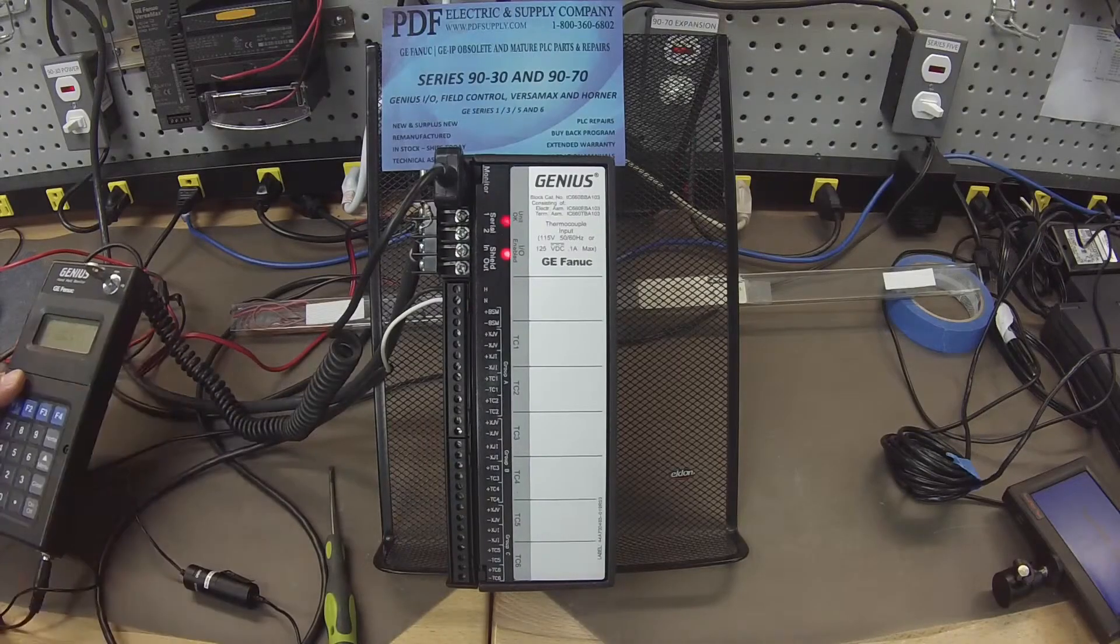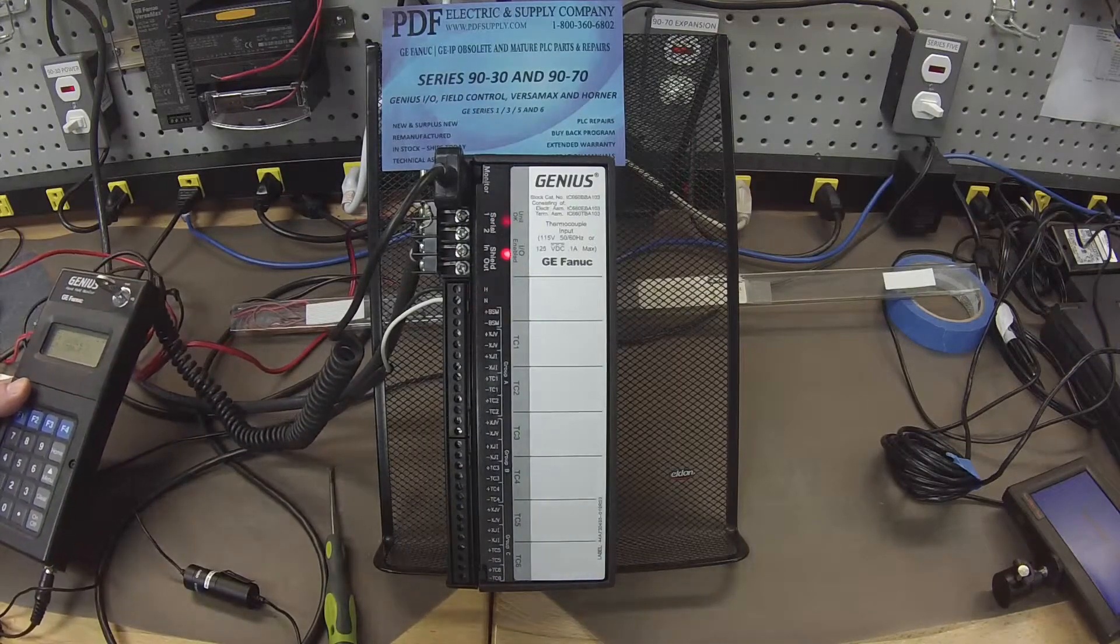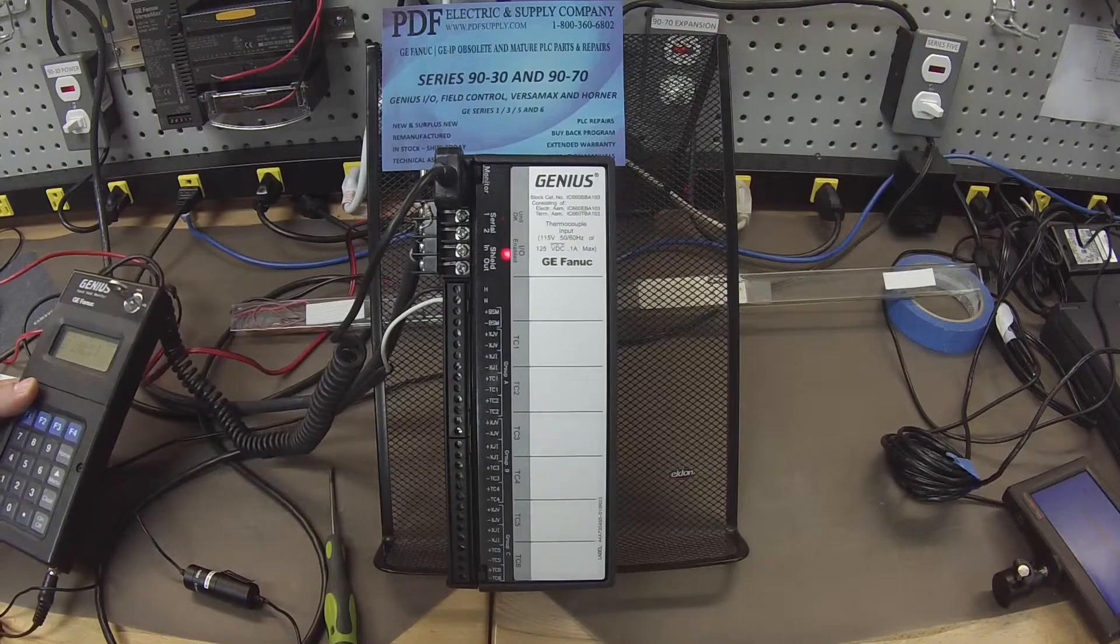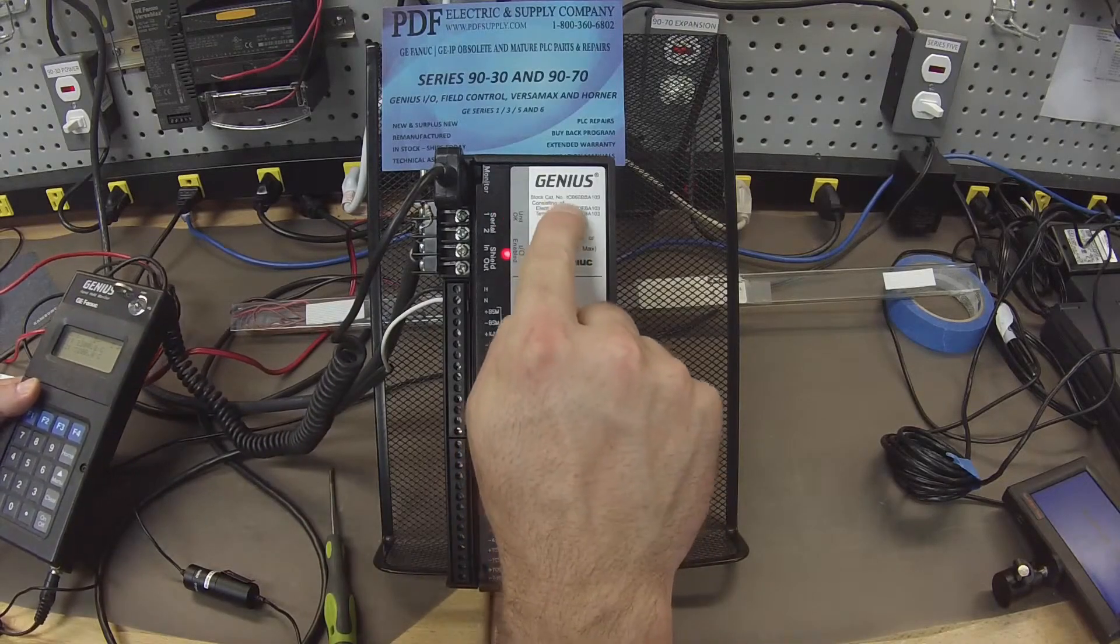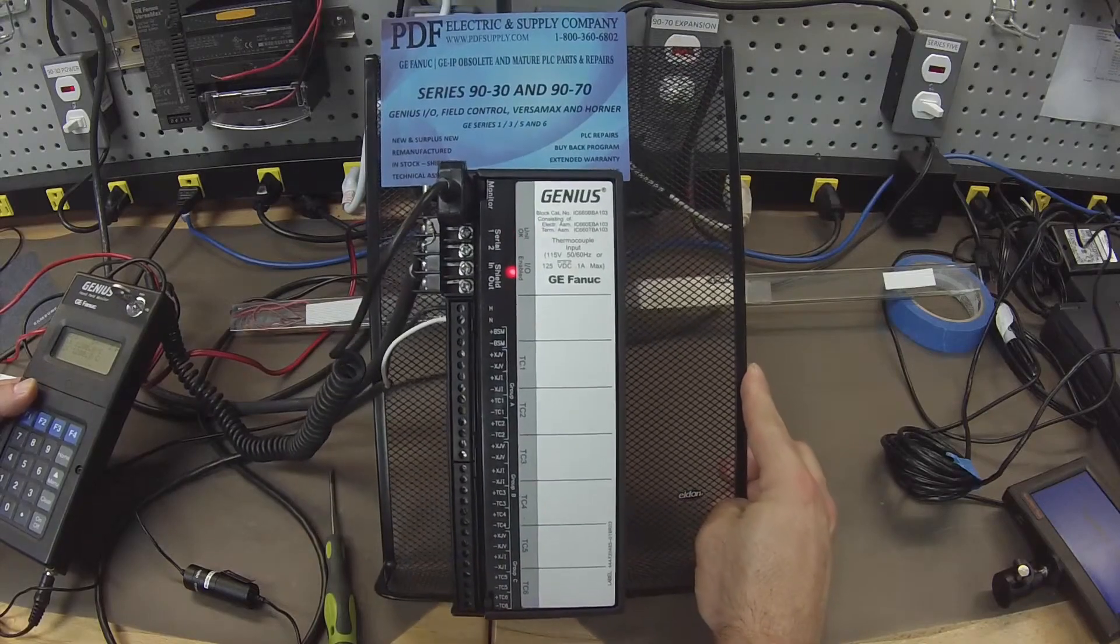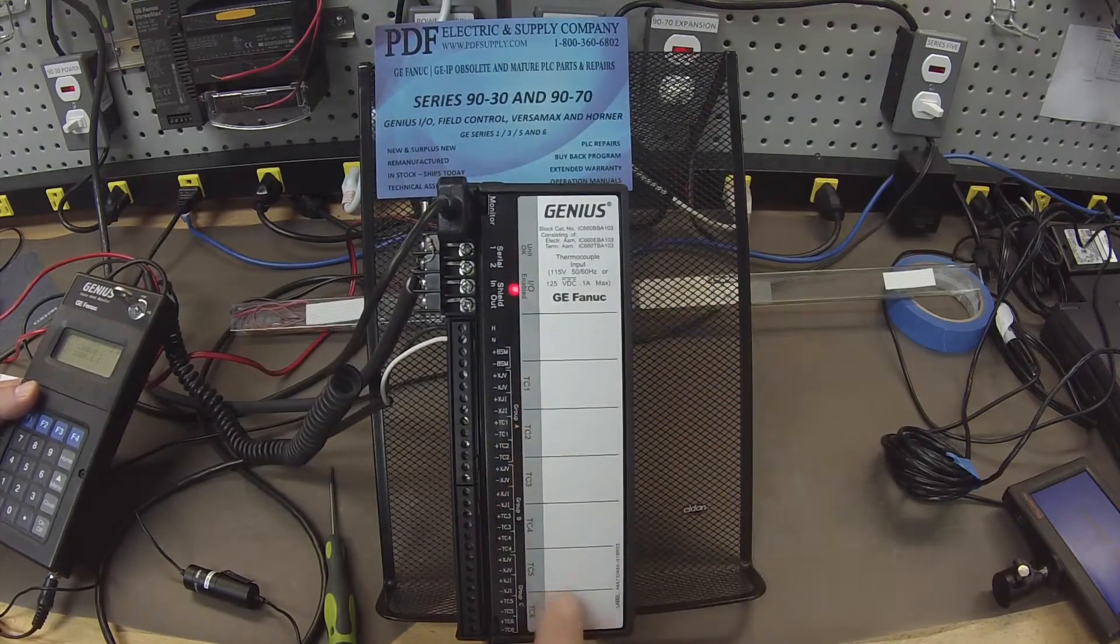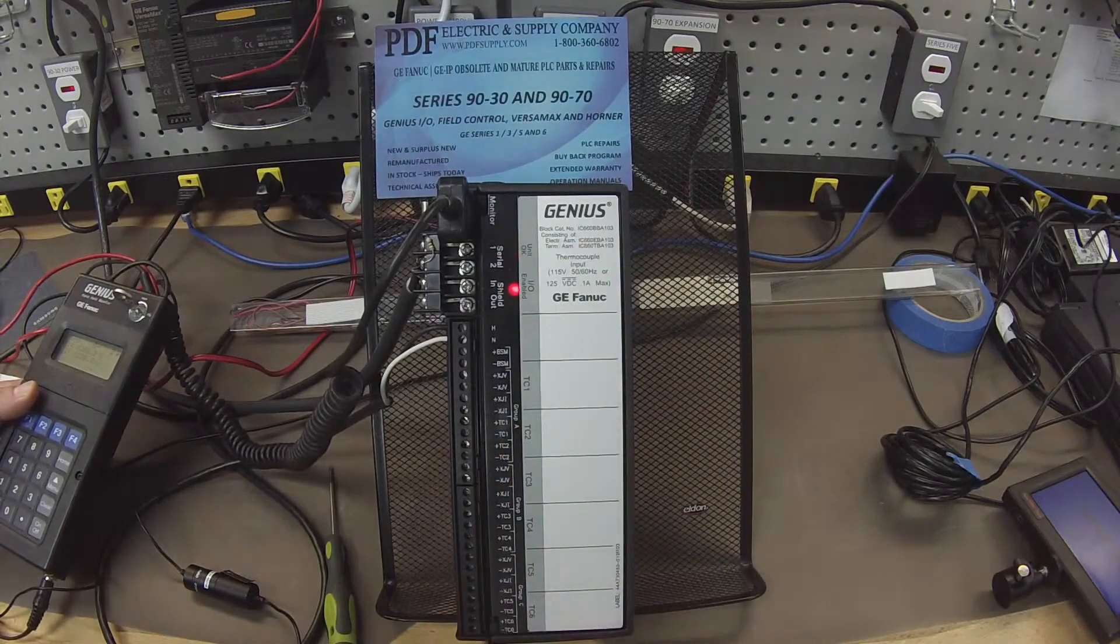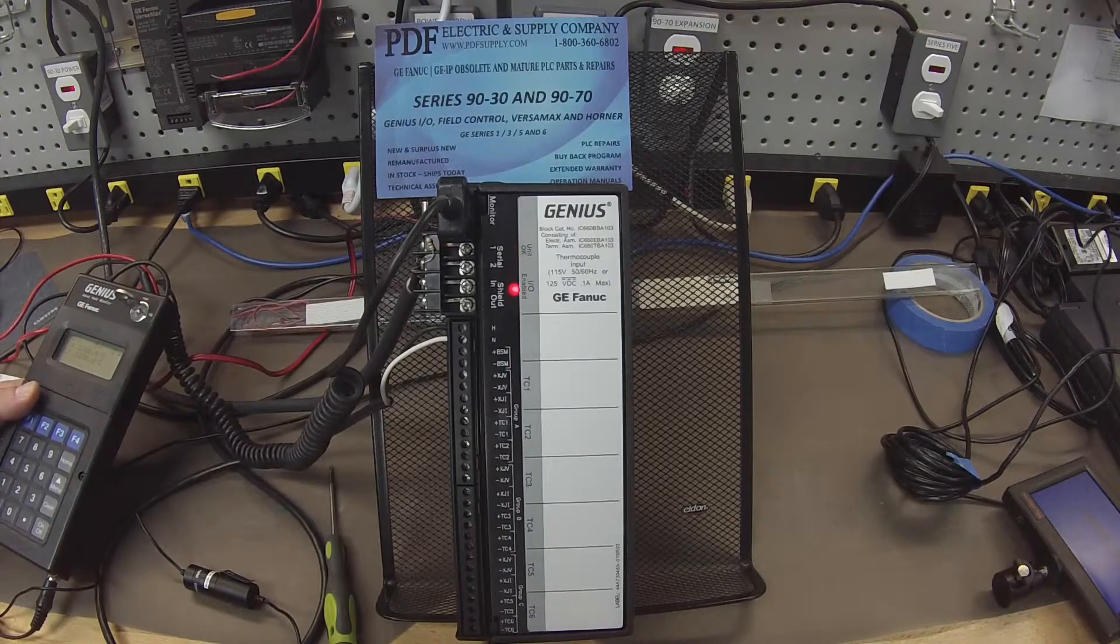Hello and welcome to PDFsupply.com. Today we're going to be testing a BBA-103 Genius Block. I have the part number here, IC-660 BBA-103, and this is a thermocouple input analog block. What we're going to do is test all the functions and features of this block.